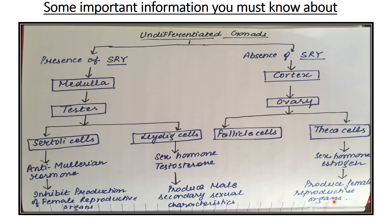Remember this summarized chart and the role of each cell type — Leydig cells, Sertoli cells, theca cells. Many interlinked concepts become clear from this one chart. Thank you so much — this much is enough for today. We will be continuing with the genetics classes in our upcoming video.